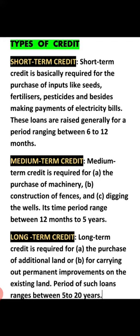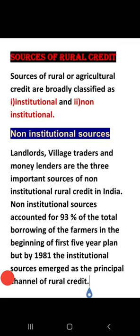Now, there are sources from which these credits can be obtained. The sources of rural credit are classified into two categories: number one is institutional sources, and number two is non-institutional sources.